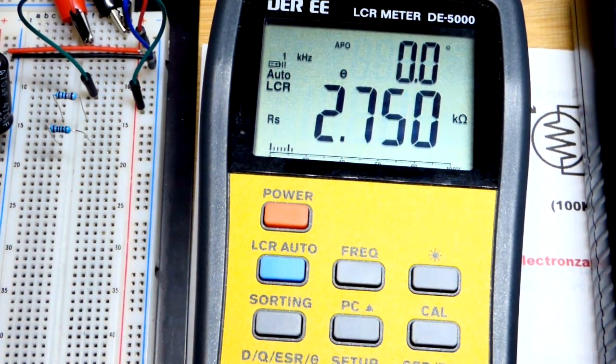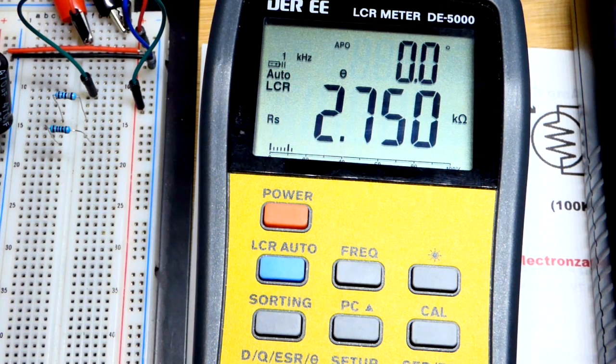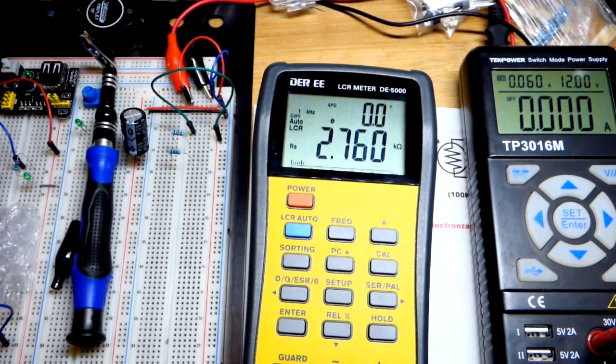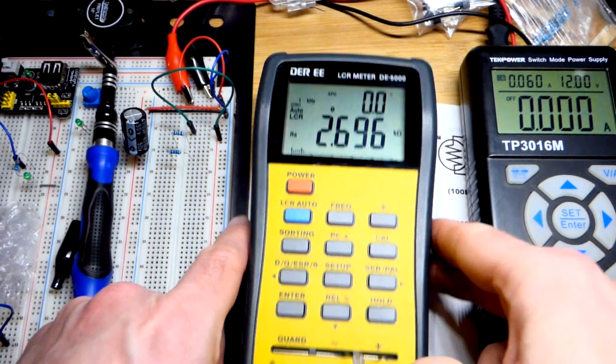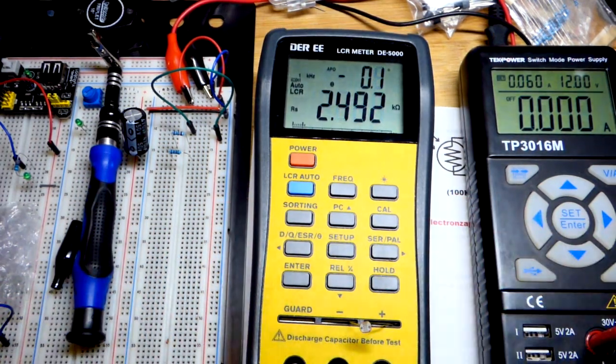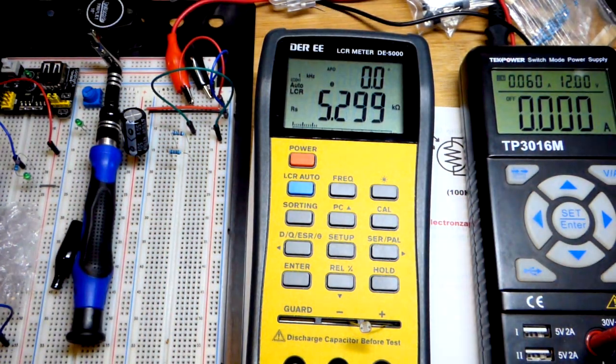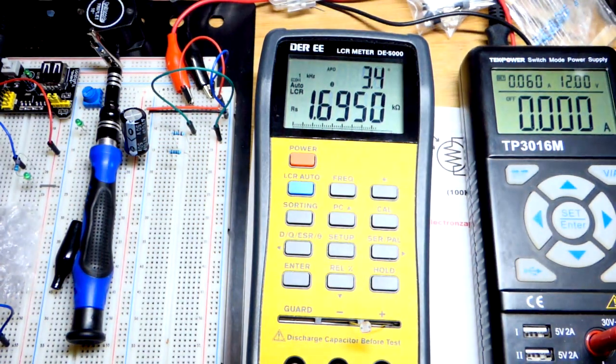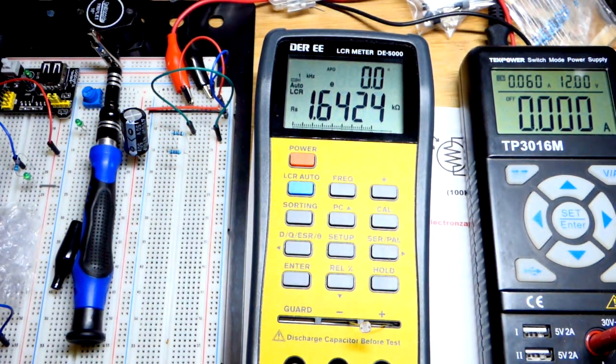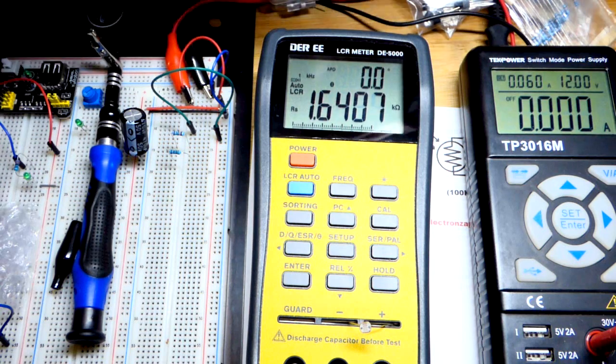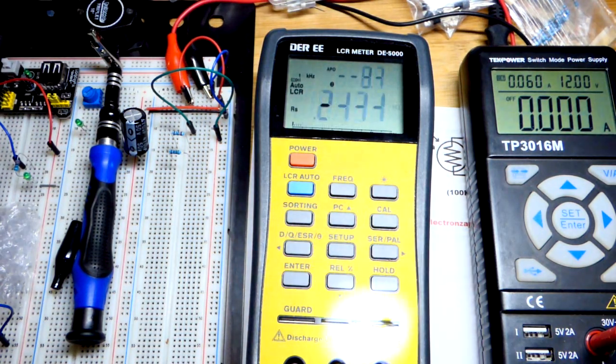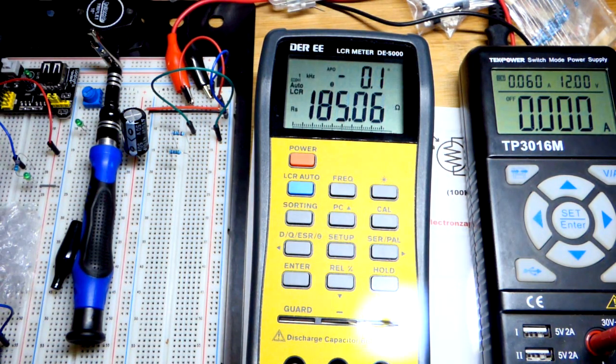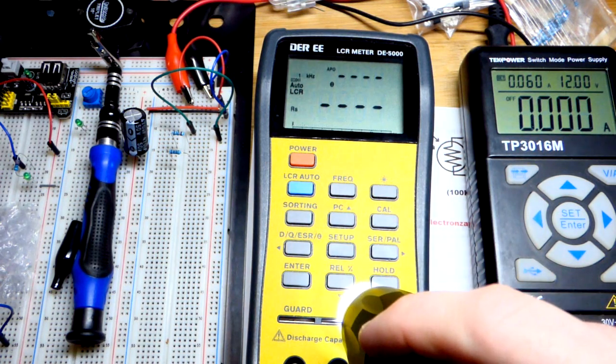That's with this particular light level. I'll dim the lights a little bit and you can see it went up. Make it a little brighter and it went down a little bit. I'll grab the flashlight here and shine it on there and now we got about 180.